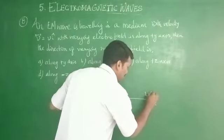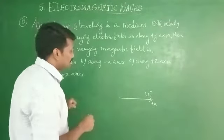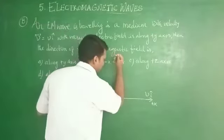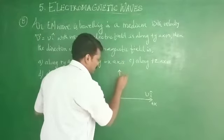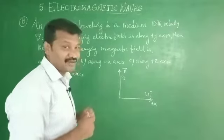What is this? The velocity of electromagnetic field is along X axis, so that is positive X axis. This is the electric field. Then what is the direction of varying magnetic field?